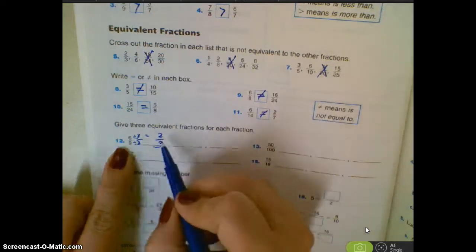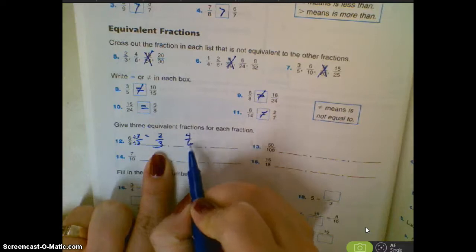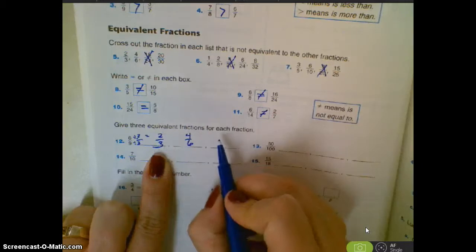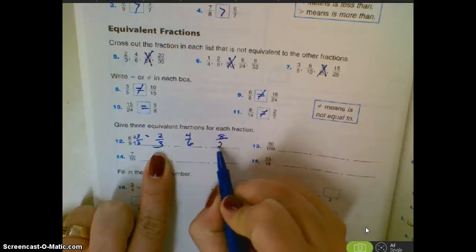Or I could double this and I would get four-sixths. And I could triple that. That's when I would get the six-ninths. Or I could multiply this one times four, that would be eight-twenty-fourths.